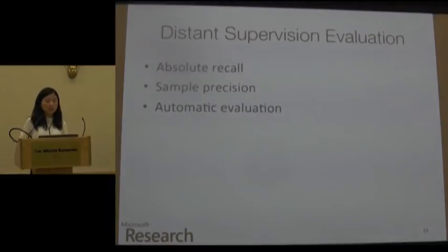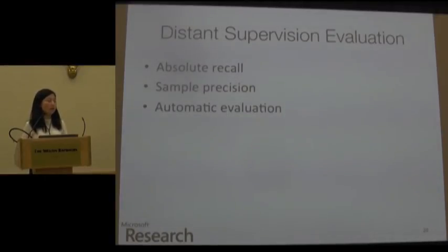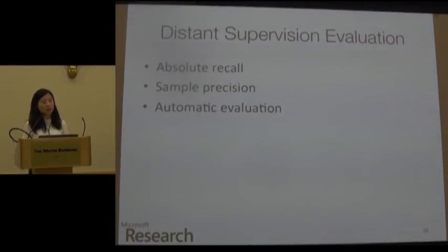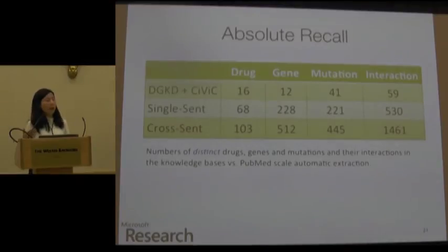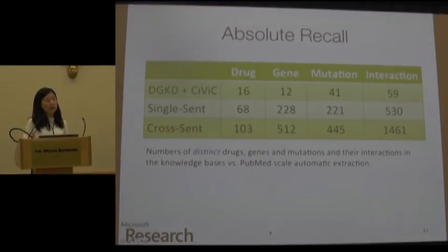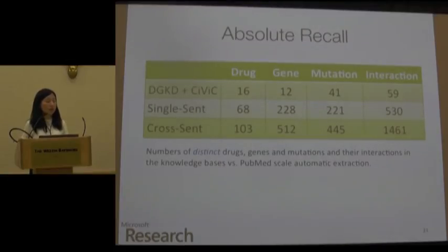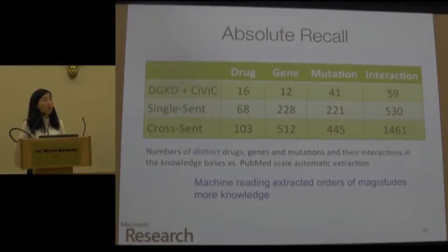Because this involves distant supervision, the evaluation is not as straightforward as in fully supervised settings since the training data is noisy. Instead of providing a single evaluation point, we provide three aspects: absolute recall, sample precision, and automatic evaluation. For absolute recall, we conduct a PubMed-scale extraction to see how many drug-gene-mutation examples we can get. By matched entity co-occurrence alone, we were only able to get thousands of examples. However, with the machine reading method, we were able to extract orders of magnitude more knowledge.